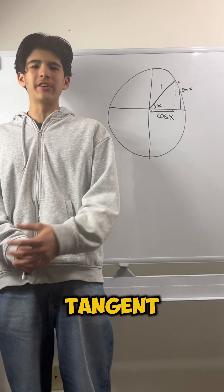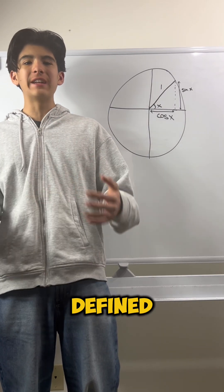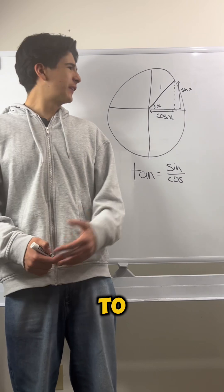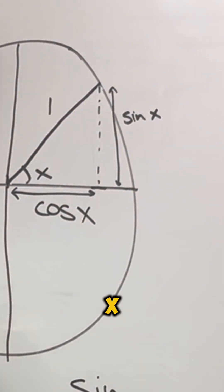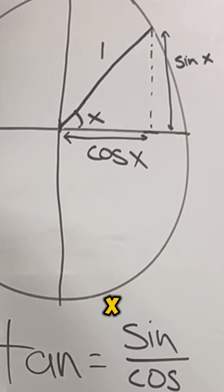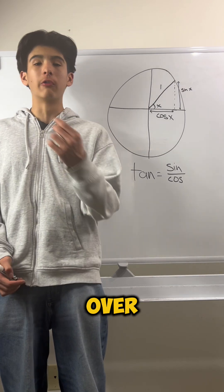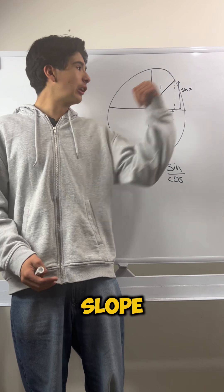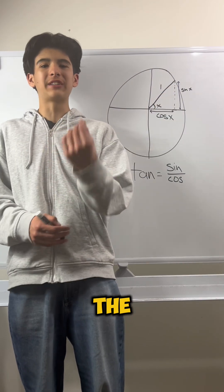But what is tangent defined as? Well, tangent is defined as sine over cosine. If you were to take this length, the sine of x, over this length, the cosine of x, then you would get the rise over the run or the slope. So, basically, the slope of this line right here would be the tangent.